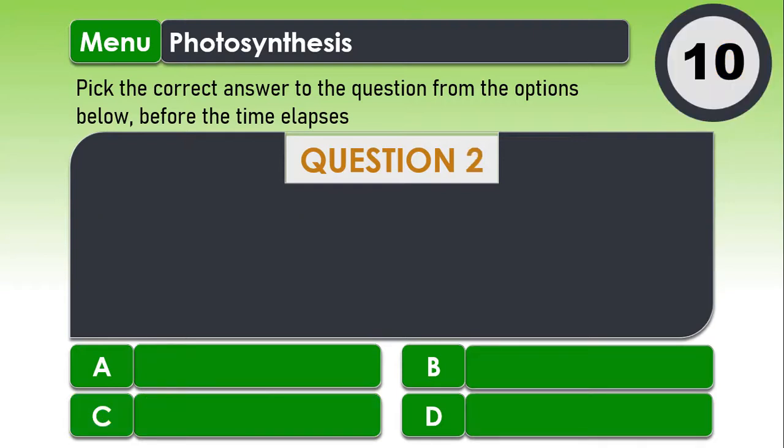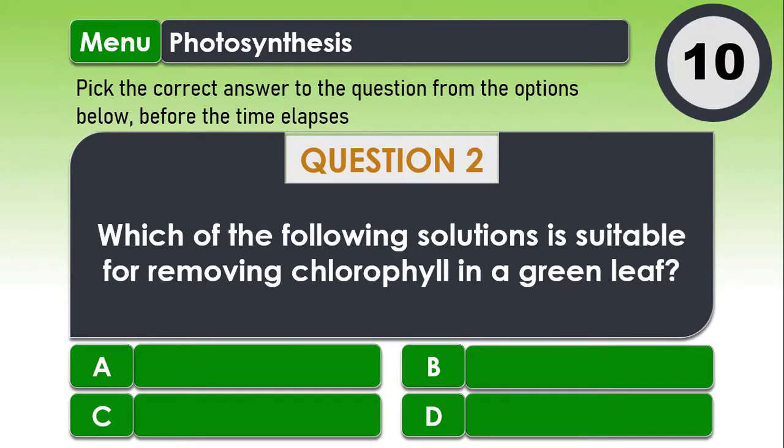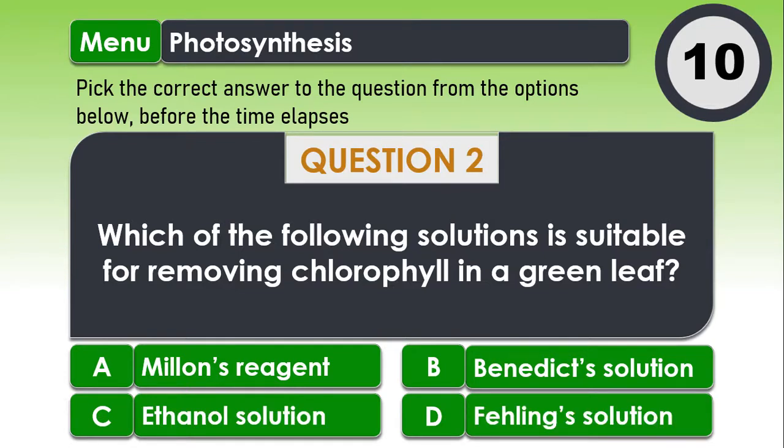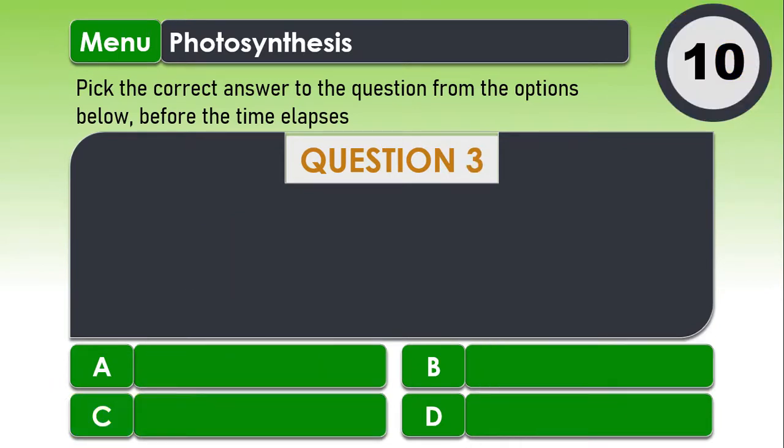Question 2. Which of the following solutions is suitable for removing chlorophyll in a green leaf? A. Millon's reagent. B. Benedict's solution. C. Ethanol solution. And D. Fehling's solution. If you chose C. Ethanol solution, then you are correct.